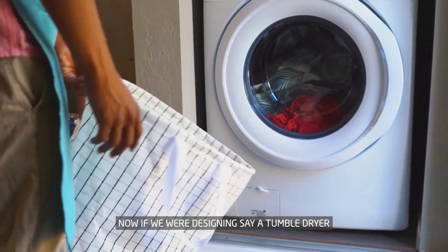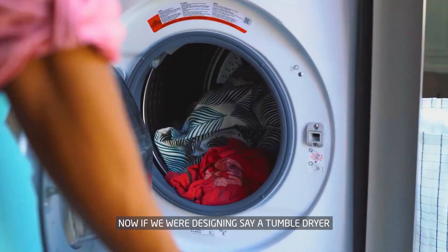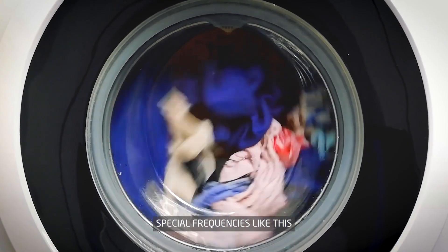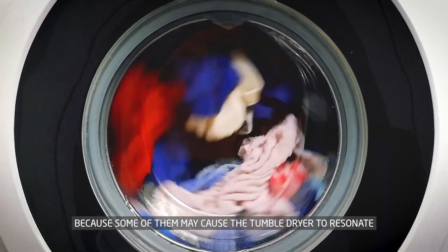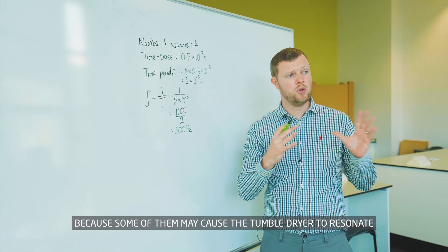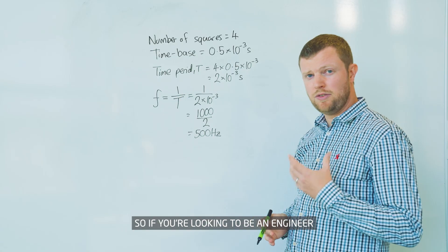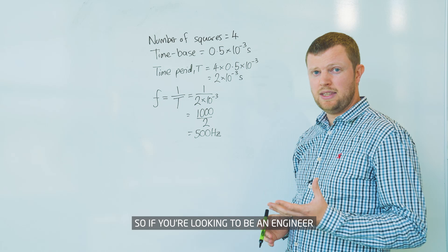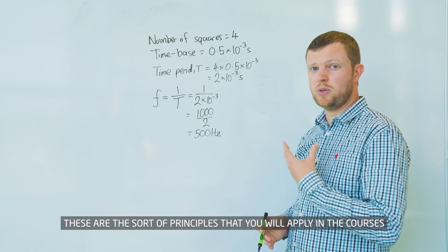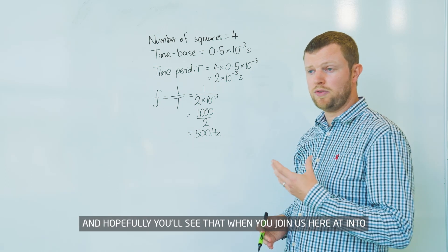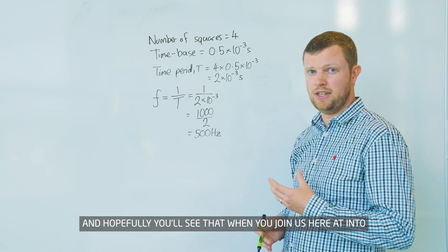Now if we were designing, say, a tumble dryer, we've got to look out for special frequencies like this, because some of them may cause the tumble dryer to resonate, which is where the oscillations get out of control. If you're looking to be an engineer, these are the sort of principles that you will apply in the courses, and hopefully you'll see that when you join us here at INTO.